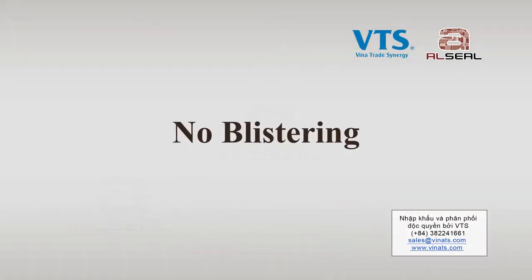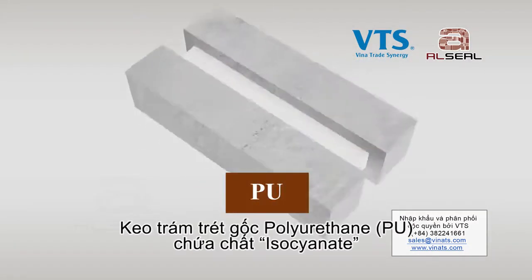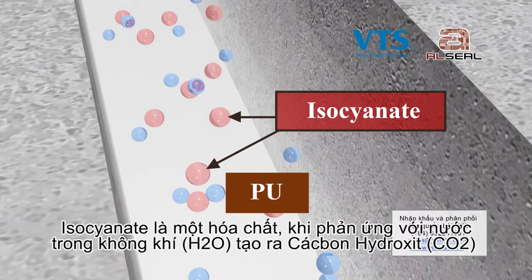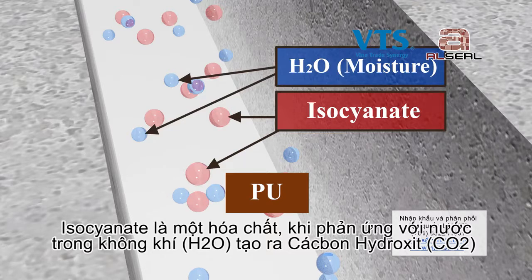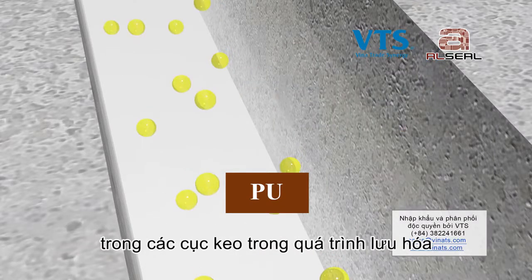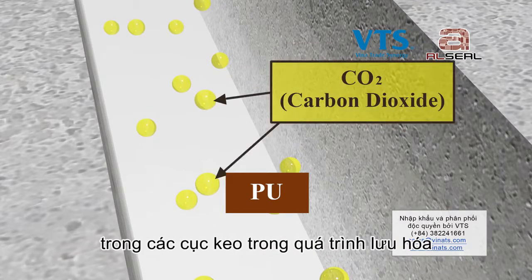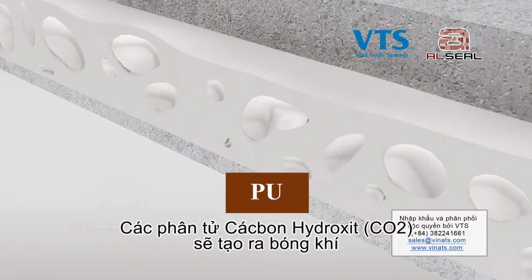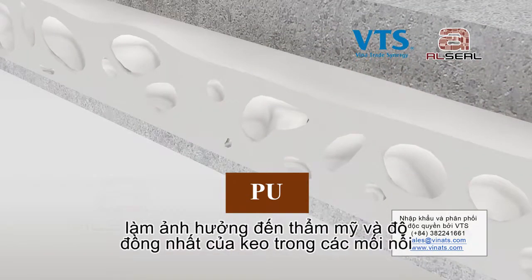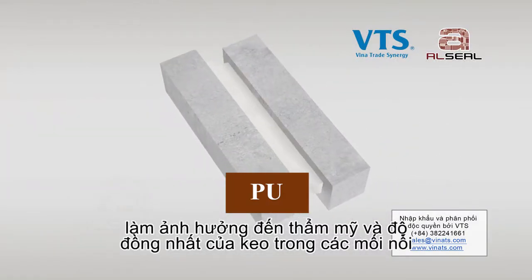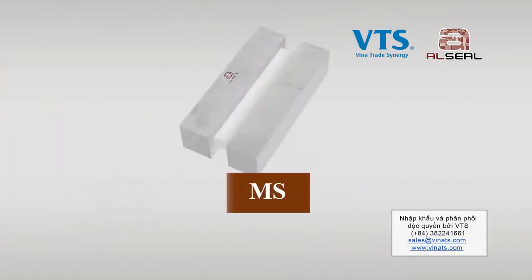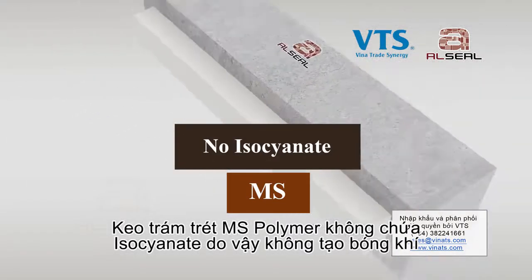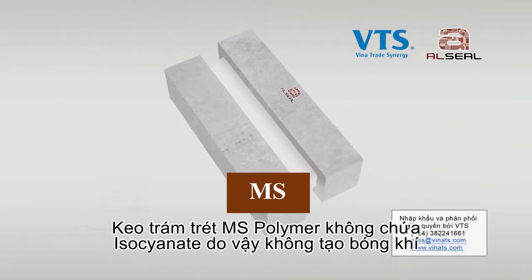No Blistering. Polyurethane sealant contains isocyanate, a chemical that will react with moisture and release carbon dioxide in the sealant bead during the curing process. The carbon dioxide molecules will form blisters, which affect both the aesthetic and integrity of sealant joints. MS Polymer Sealant does not contain isocyanate, therefore there will not be any blistering issue.